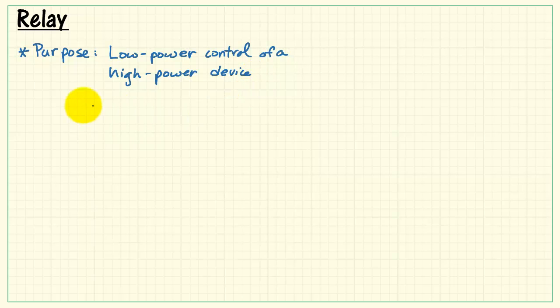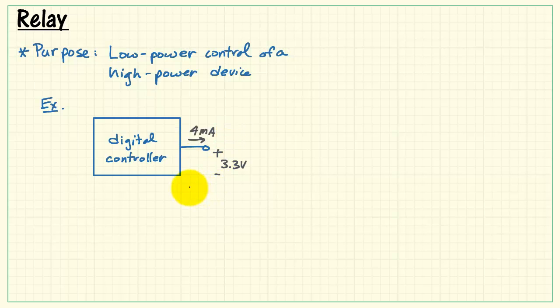For example, supposing we have a digital controller, such as the NI MyRio, with a digital output level of 3.3 volts and the ability to drive about 4 milliamps. When you take the product of those two values, you have 13 milliwatts.